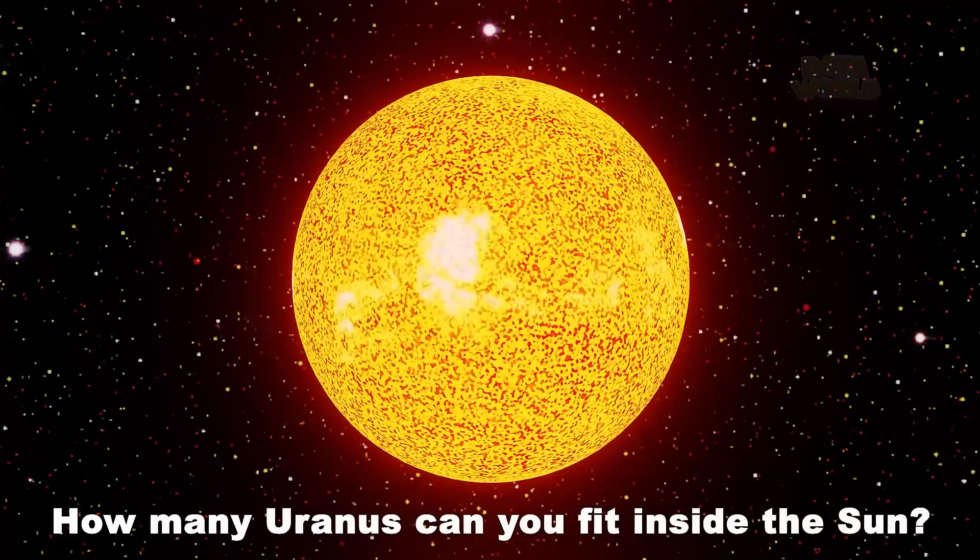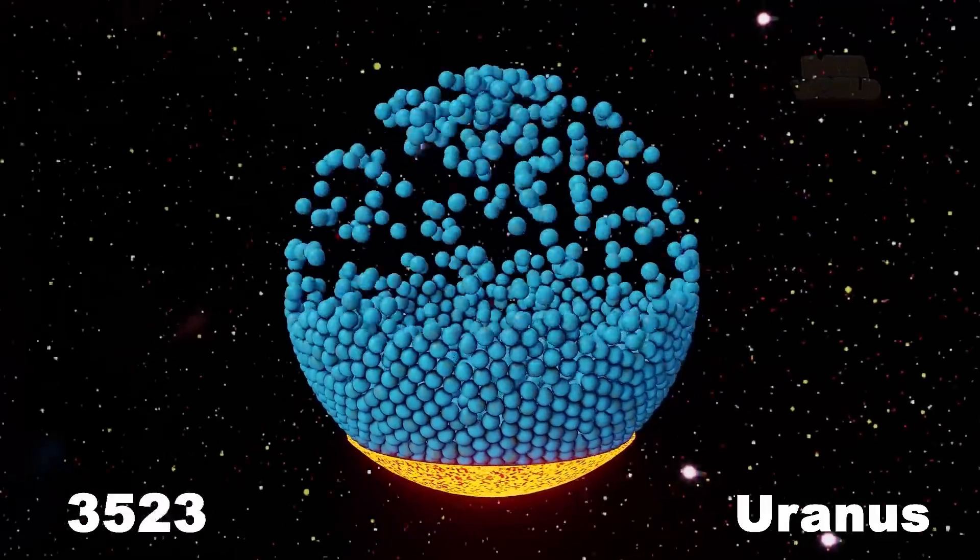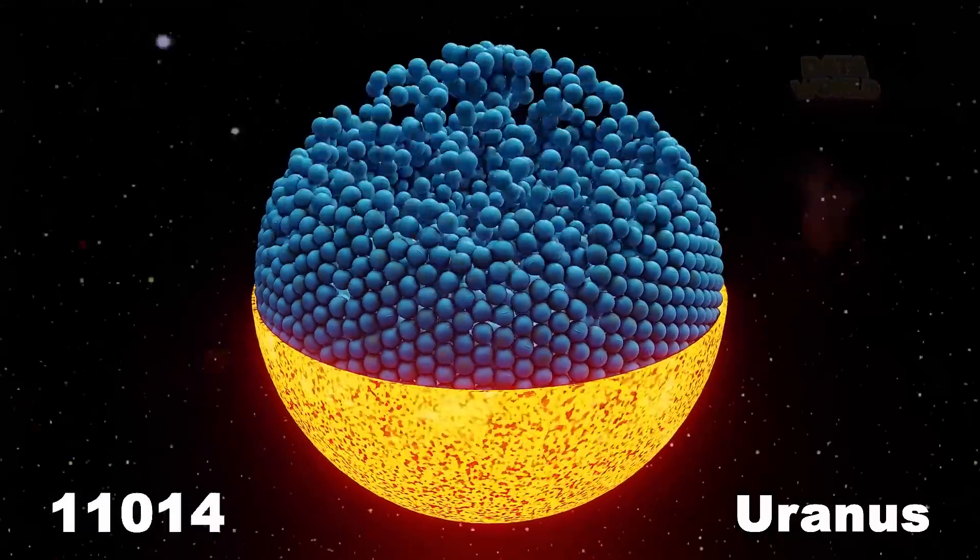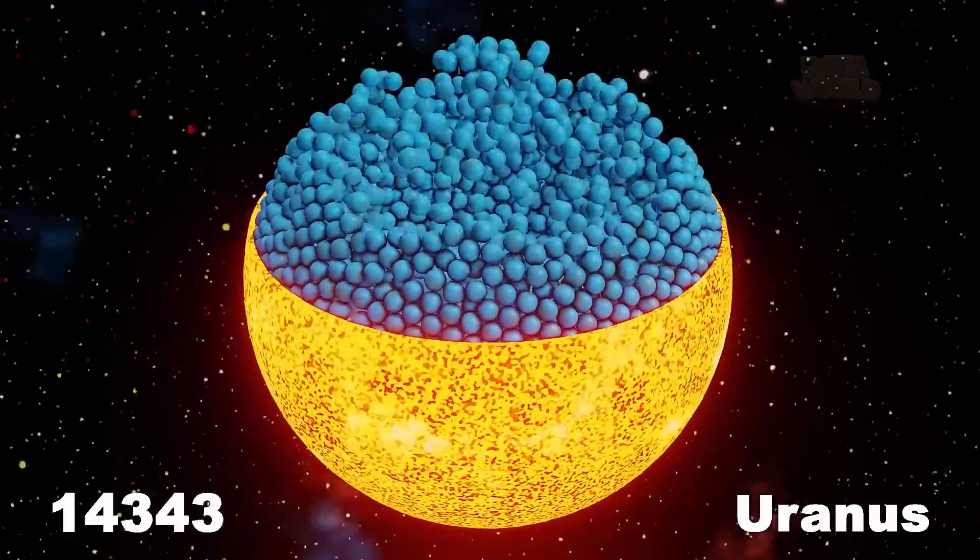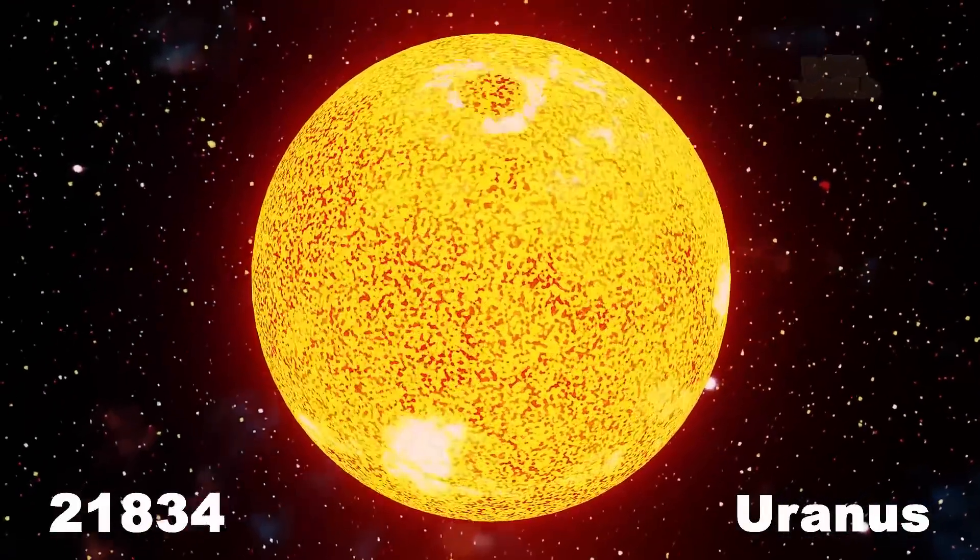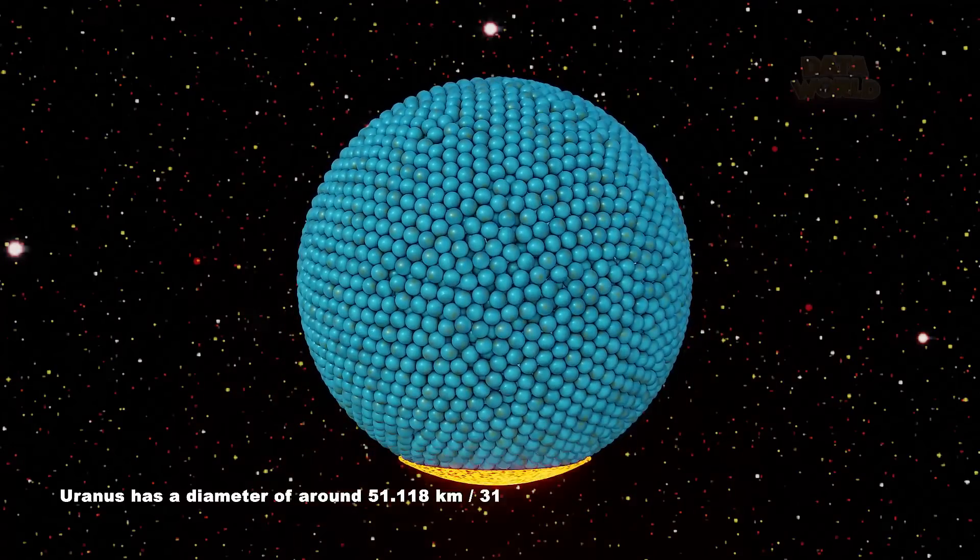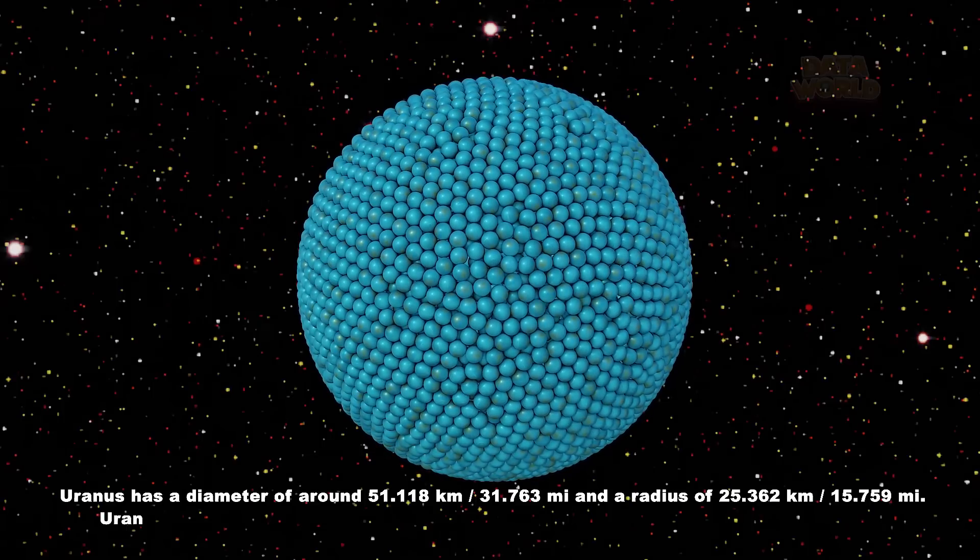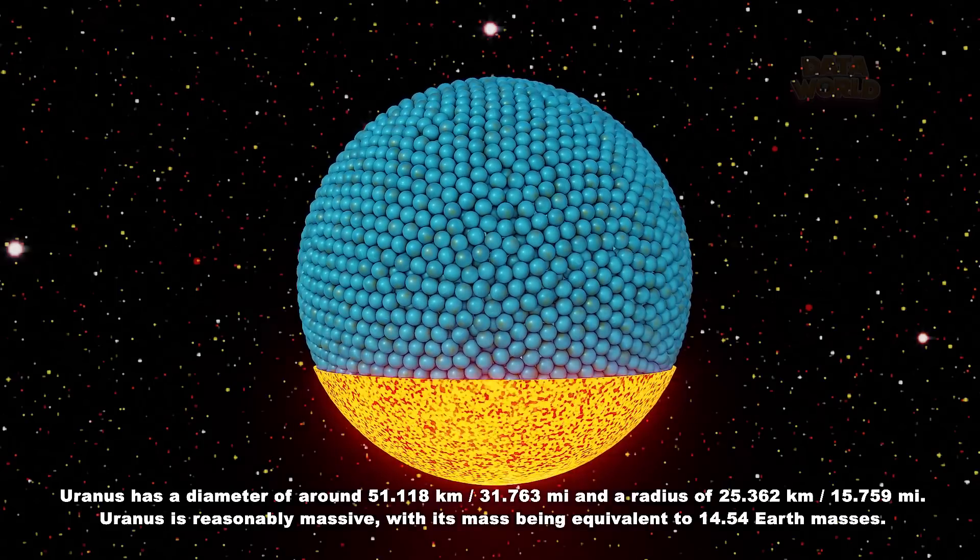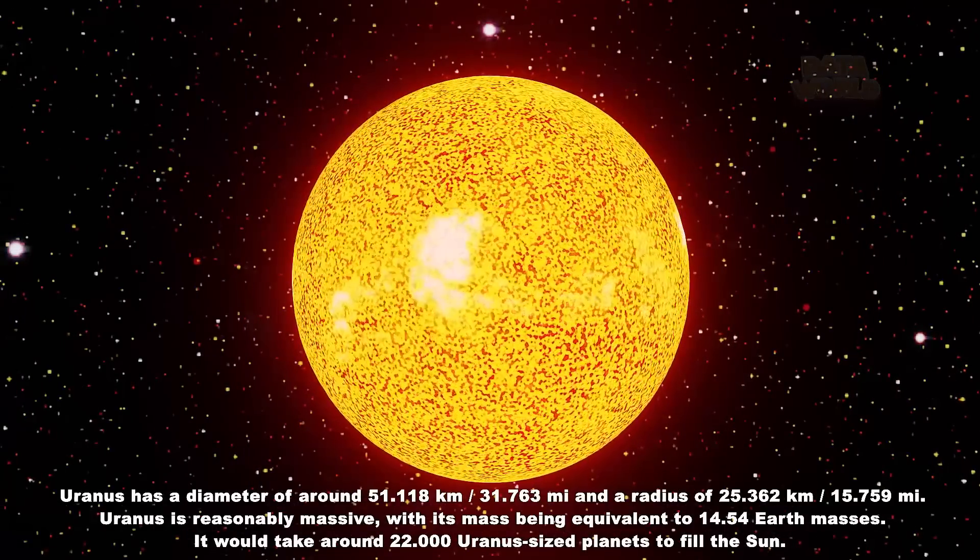How many Uranus can you fit inside the Sun? 22,000 Uranus. Uranus has a diameter of around 51,118 km and a radius of 25,362 km. Uranus is reasonably massive, with its mass being equivalent to 14.54 Earth masses. It would take around 22,000 Uranus-sized planets to fill the Sun.